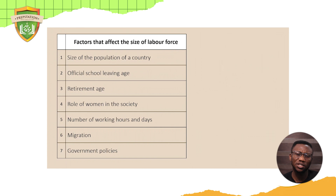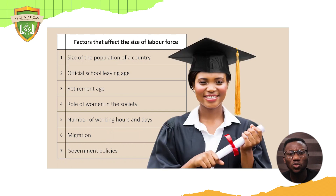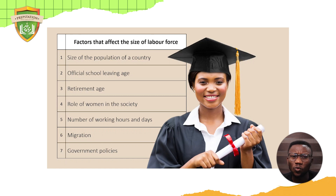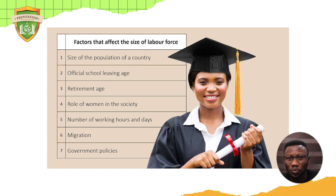Let's talk about the factors that affect the size of our labor force. Number one is the official school leaving age — at what age are people allowed to leave school? People go to school to acquire a skill or a trade which they can use to work. In Nigeria, the school leaving age for people with secondary school leaving certificates is maybe around 16, 17, or 18. From that age you're allowed to work, and that would not be considered child labor. Asking a child of 10 to work is child labor — that's illegal.